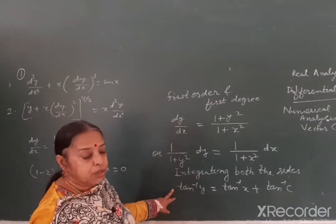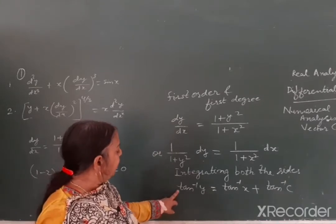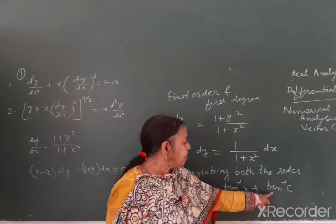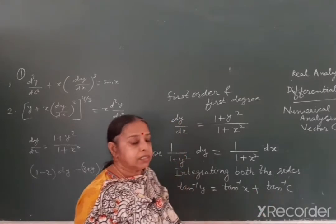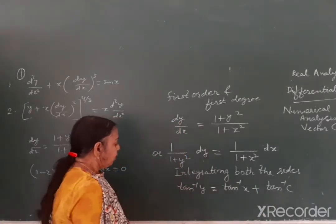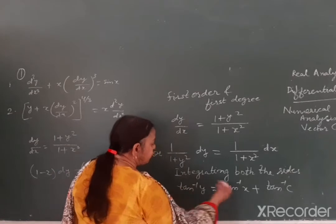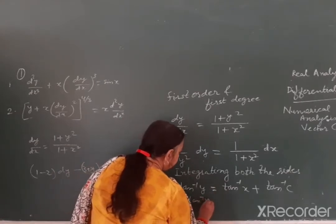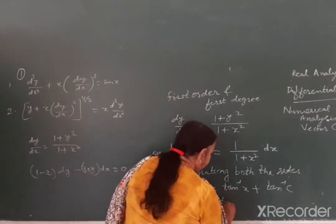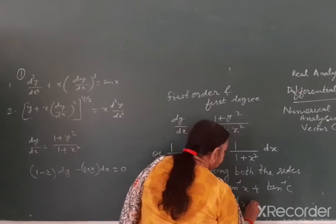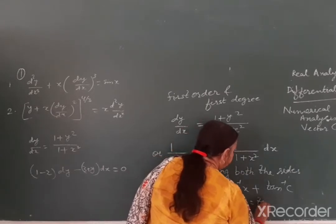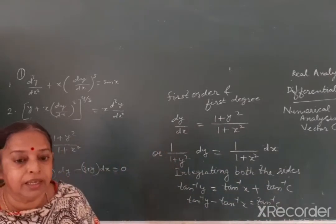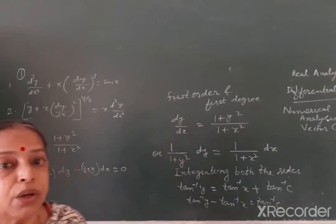Dono taraf samaakalan karne par iska integral kya ho jaayega - tan inverse y, aur iska integral kya ho jaayega - tan inverse x plus some constant of integration. Toh usko tan inverse c ke roop mein bhi likh sakti hain. Toh is differential equation ka solution kya hoga: tan inverse y is equal to tan inverse x plus tan inverse c. Aur aap chahein toh isko aur aage bhi solve kar sakte hain: tan inverse y minus tan inverse x is equal to tan inverse c. Ye iska solution ho jaayega.